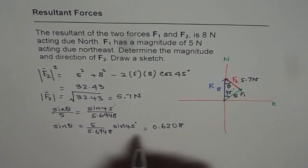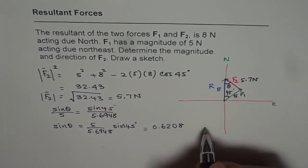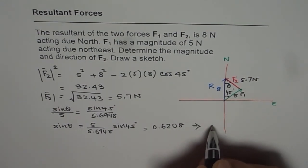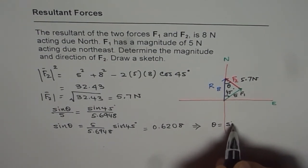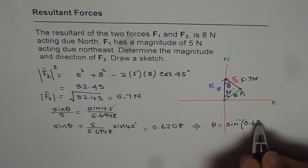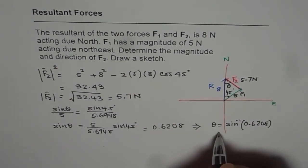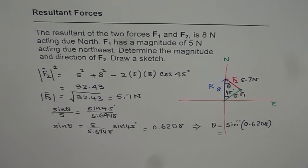Now from here, theta is equal to, so from here we can say theta is equal to sine inverse of 0.6208 and that is equal to second function sine inverse equals to 38.37.